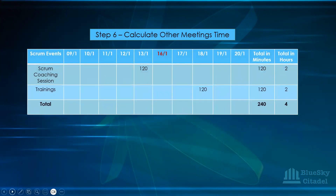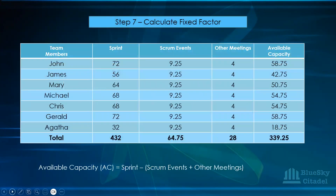You also calculate other meeting times. For this sprint, there's a scrum coaching session of two hours on a Friday, and a training session of two hours organized for team members — perhaps for an upgraded system. These are not fixed; they vary sprint to sprint. But when they happen, you factor them in. The total for other meetings is four hours, which also needs to be deducted.